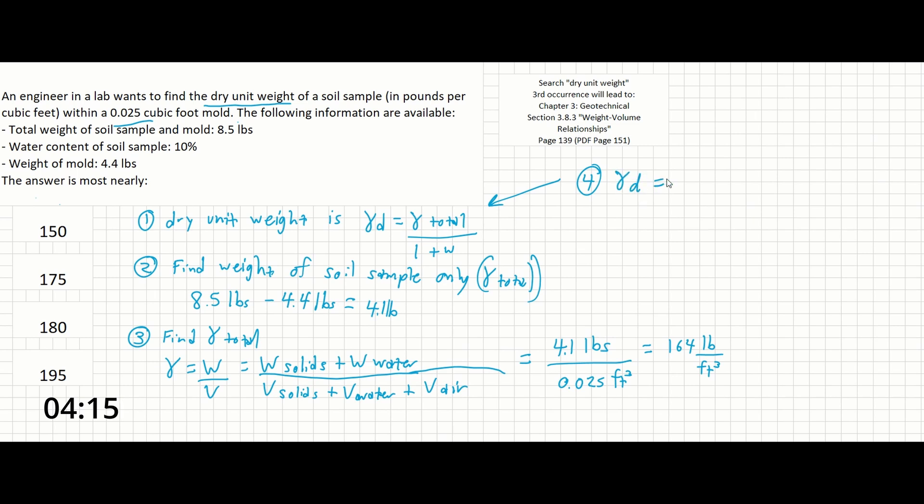So gamma d is going to be gamma total, which we've calculated out to be 164 pounds per cubic feet, over 1 plus w. In this case, w is going to equal 10% as provided. This is the same thing as writing 10 over 100 or 0.1, which is the way we will describe it in this case. And then finally, gamma d is calculated out to be 149.09 pounds per cubic foot. Our closest answer is going to be answer A.